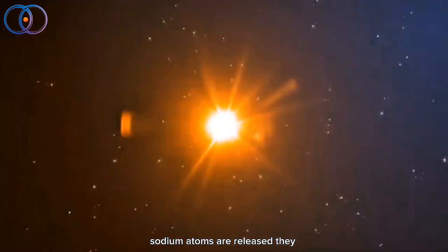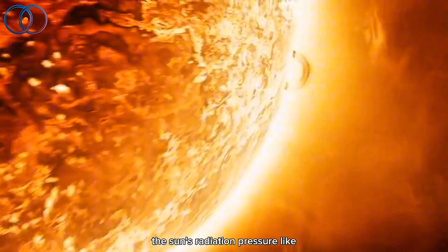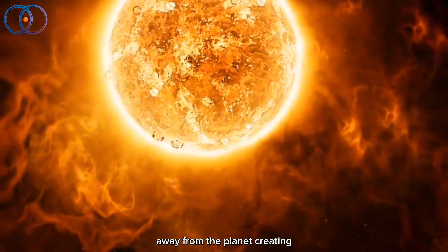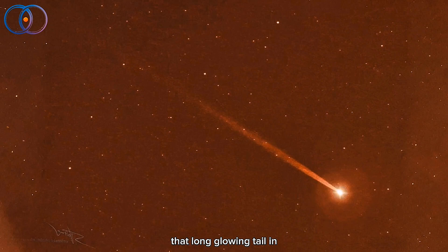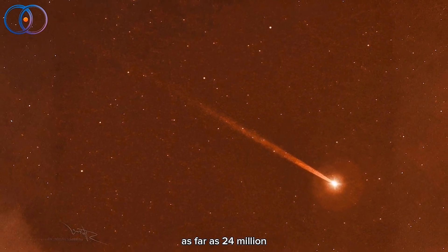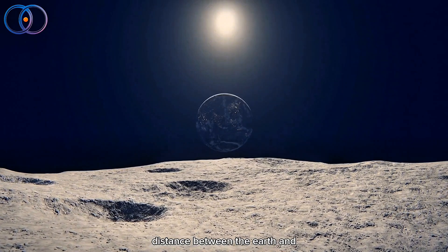And once these sodium atoms are released, they don't just float around aimlessly. The sun's radiation pressure, like a solar wind, pushes them away from the planet, creating that long glowing tail. In fact, this tail can stretch as far as 24 million kilometers, about 60 times the distance between the Earth and the Moon.